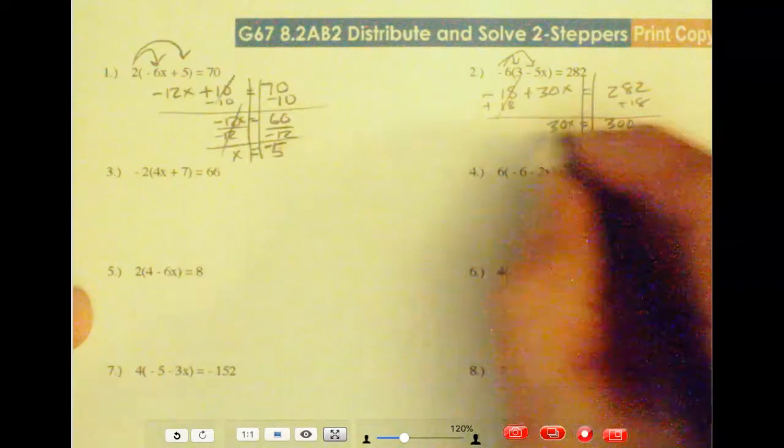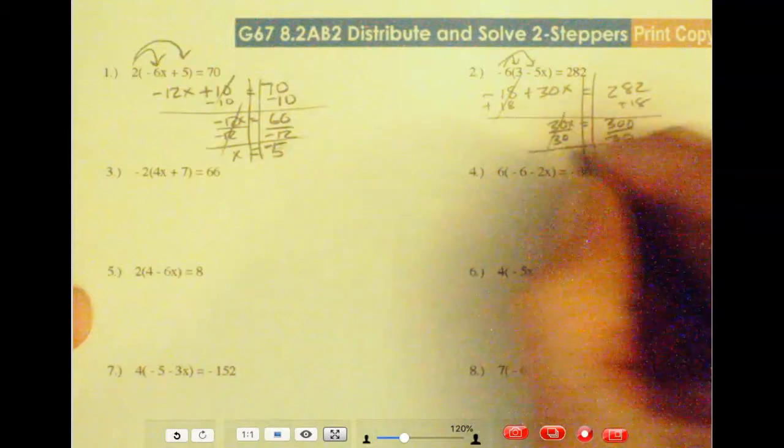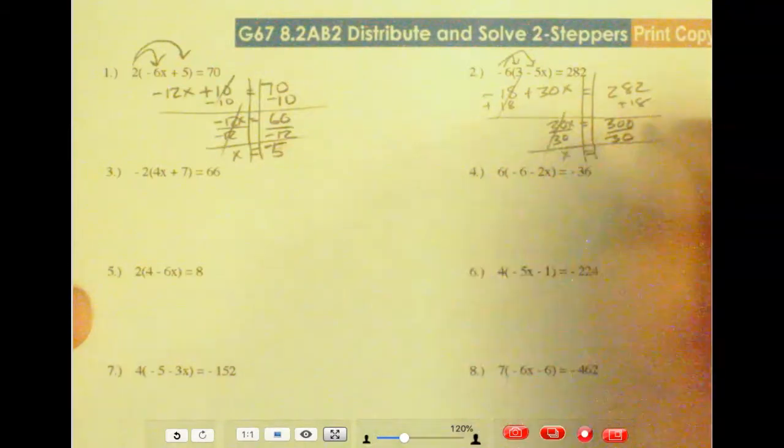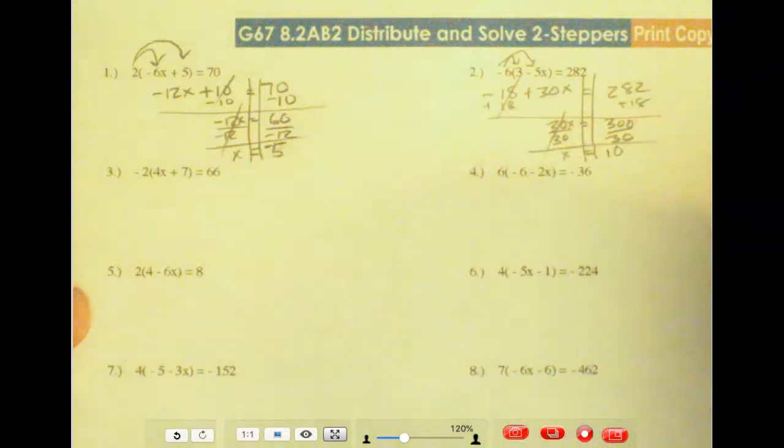We divide by 30. We isolate that x. And you get x equals, well, it's 10. 300 divided by 30 is 10.